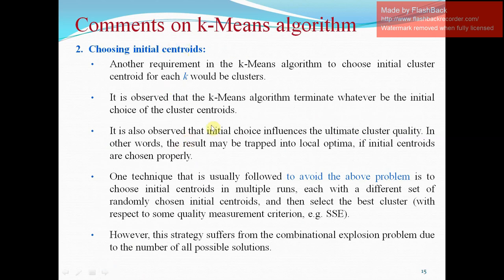Choosing initial centroid. Another requirement in K means algorithm is to choose initial cluster centroid for each K would-be clusters. It is observed that the K means algorithm terminates whatever be the initial choice of the cluster centroid. It is also observed that the initial choice influences the ultimate cluster quality. In other words, the result may be trapped into local optima if initial centroid are not chosen properly. One technique that is usually followed to avoid the above problem is to choose initial centroid in multiple runs. Each with a different set of randomly chosen initial centroid and then select the best cluster with respect to the sum quality measurement criteria type. For example, SSE.